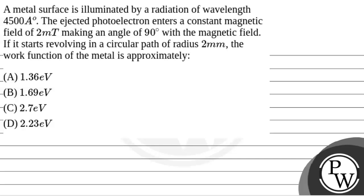Hello, sir. Let's read the question. The question says that a metal surface is illuminated by a radiation of wavelength 4,500 angstrom. The ejected photoelectron enters a constant magnetic field of 2 millitesla, making an angle of 90 degrees with the magnetic field. If it starts revolving in a circular path of radius 2 mm, the work function of the metal is approximately.